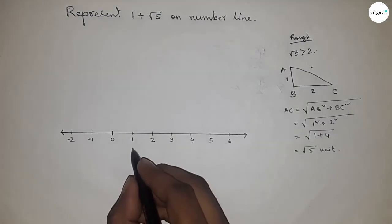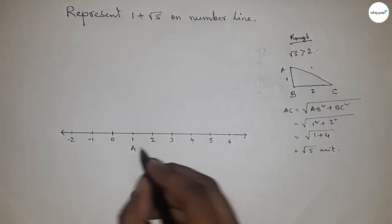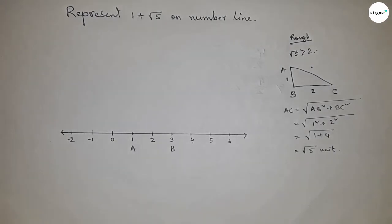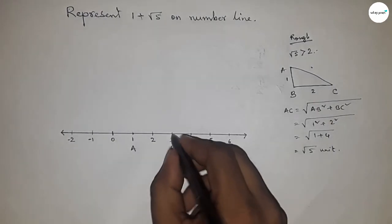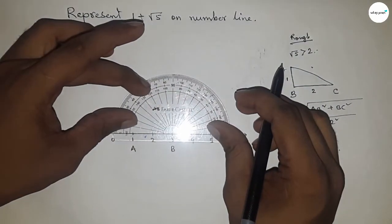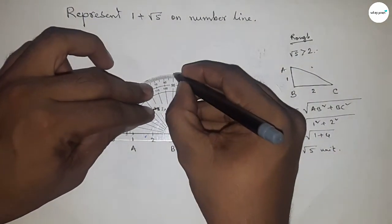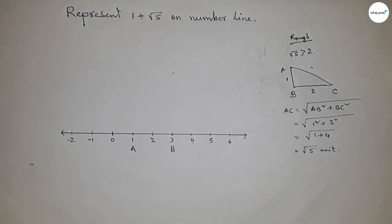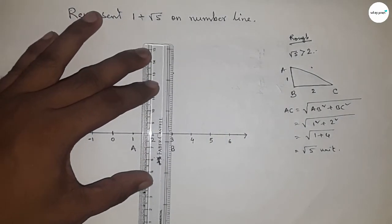We left 1 unit because we have to represent 1 plus root 5. First we leave 1 unit length, then we represent root 5. So first, draw a 90 degree angle at point B. Now join this.